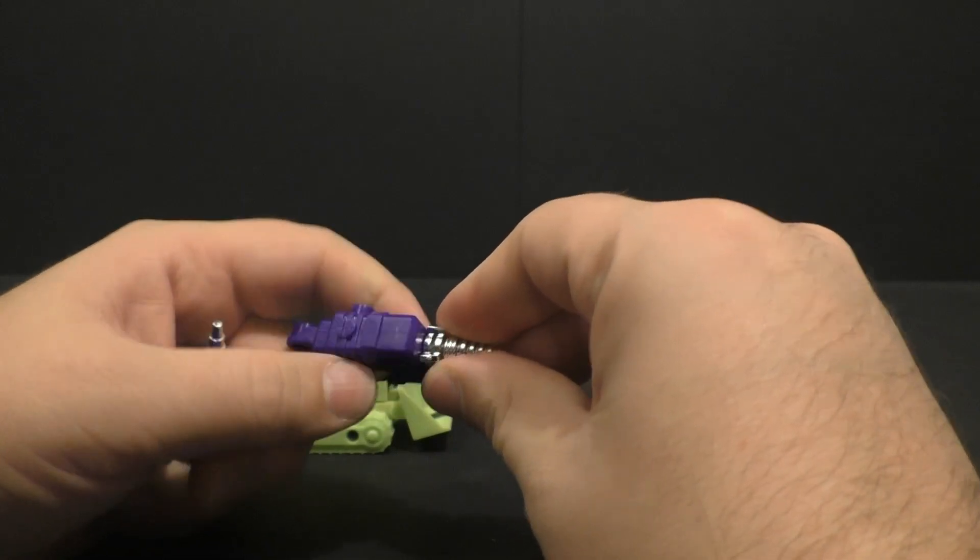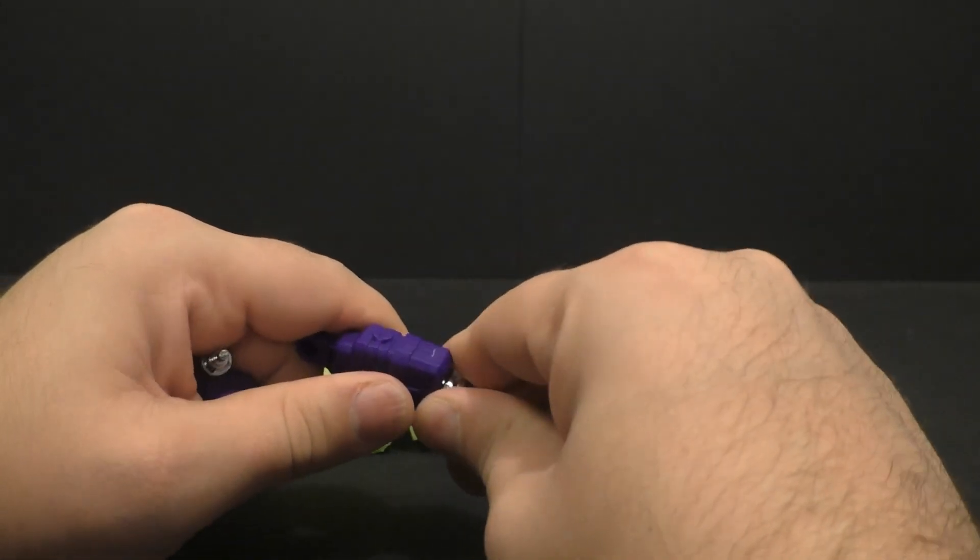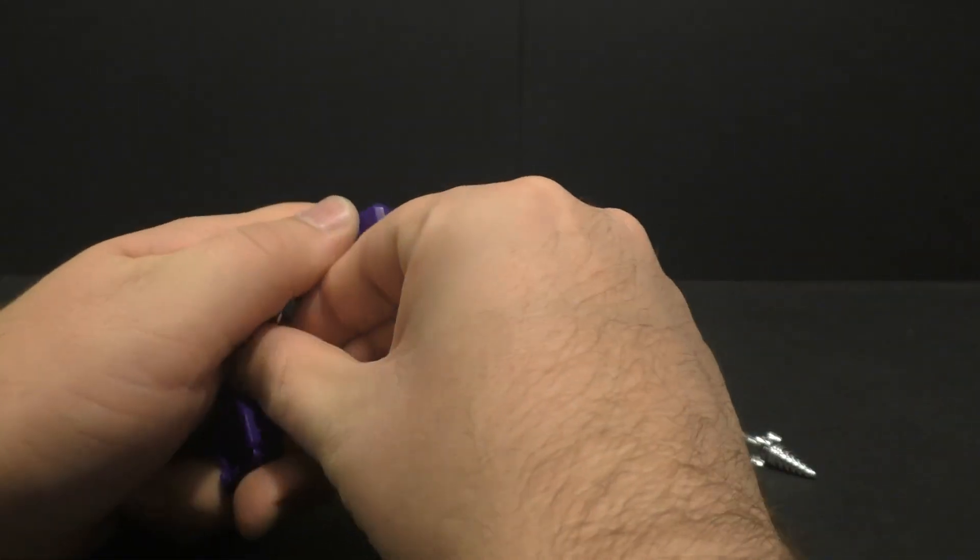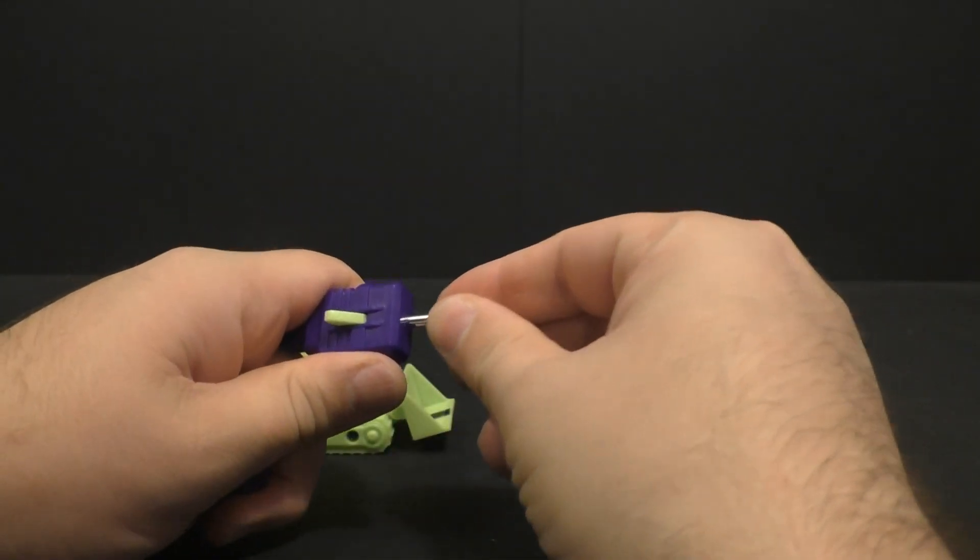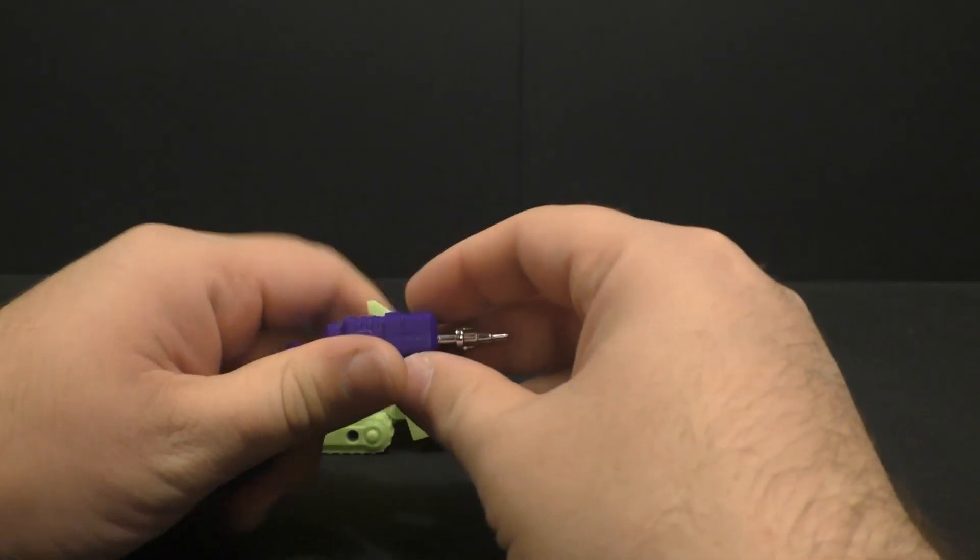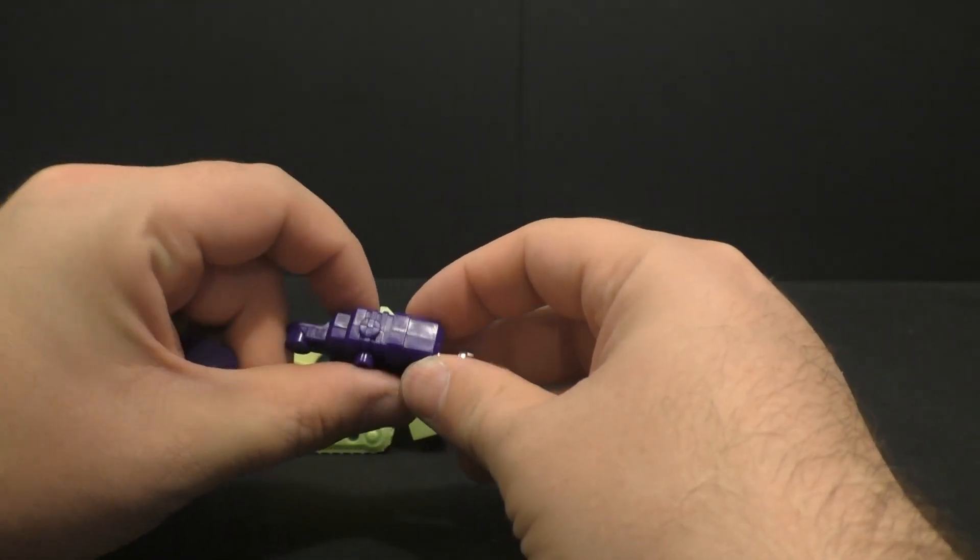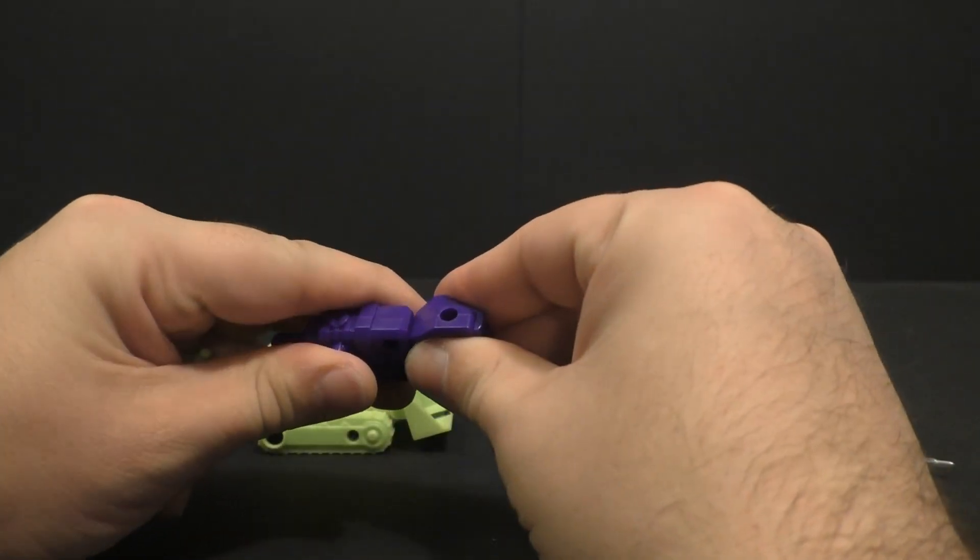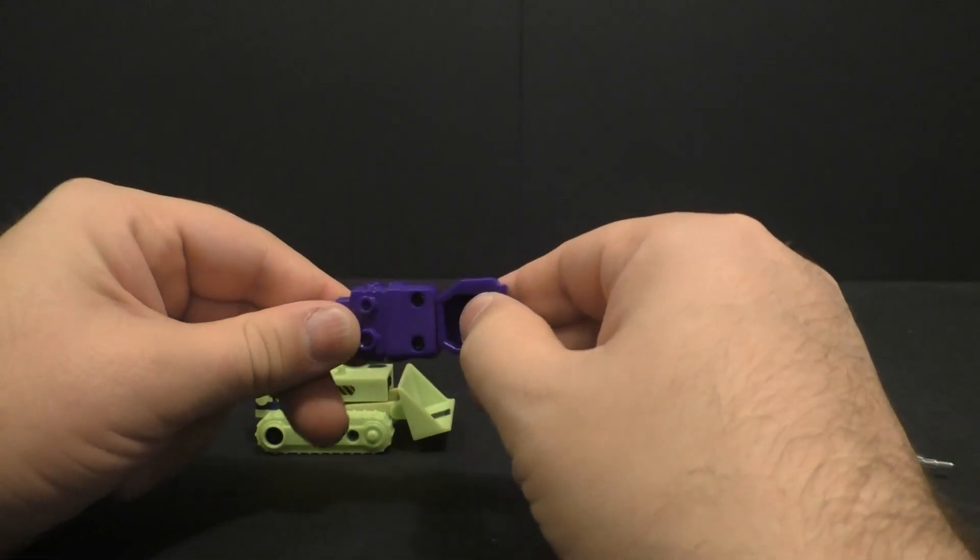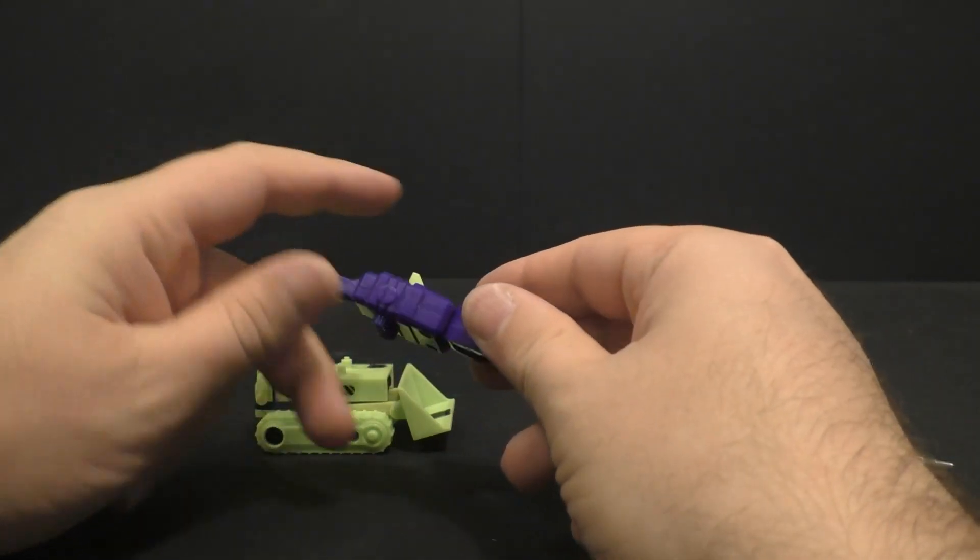Now, I don't know if this is supposed to be spring loaded but mine is not doing anything. So he's got a couple of attachments that you can put in there. Like it clicks in there just fine but it doesn't actually launch which is fine by me. Now you have the fist. You plug that in there. And again, it doesn't launch but it actually keeps it in there pretty nice and tight.